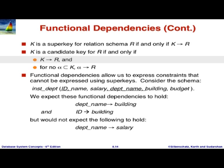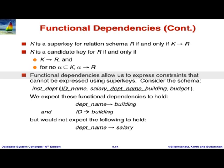If a key determines all attributes in the schema but no subset of it determines the whole schema, then it is a candidate key. You choose one of the candidate keys as primary key. But there are things which functional dependencies can express which super keys and primary keys cannot express.